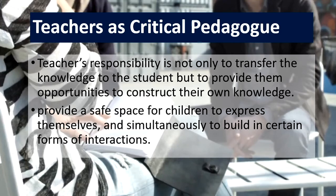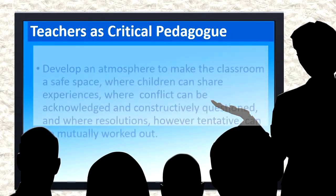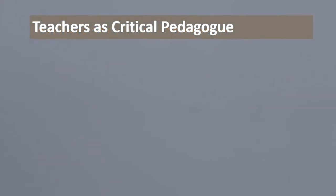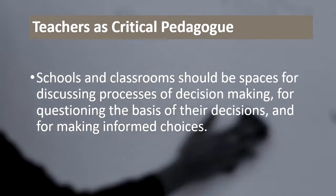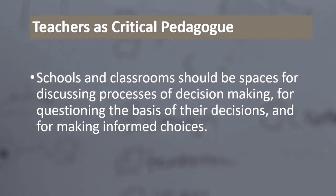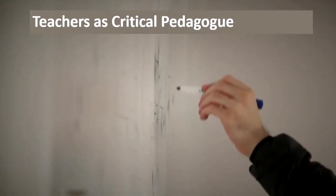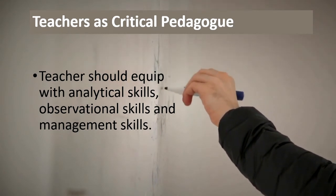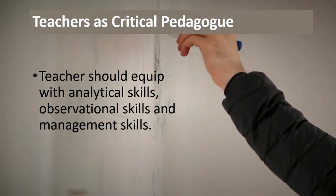If you behave as a critical pedagogue, it is expected that you will develop an atmosphere making the classroom a safe space where experiences can be shared, conflicts can be acknowledged and constructively questioned, and resolutions may be tentative and mutually negotiated. Sharing of ideas, constructive questioning, and acknowledging conflicts are characteristics of a critical classroom. Your school and classroom should be a space for discussing decision-making processes and questioning the basis of decisions. Before facilitating learners, you should be equipped with analytical skills, observational skills, and management skills.